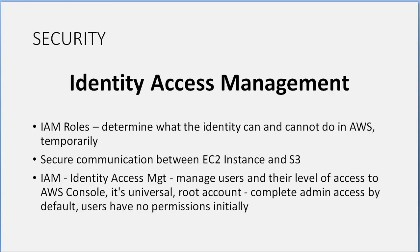Identity Access Management (IAM): Rules determine what an identity can and cannot do in AWS, temporarily securing communications between EC2 instances and S3. IAM manages users and their level of access to the AWS console. It is universal. The root account has complete admin access by default. Users have no permissions initially.